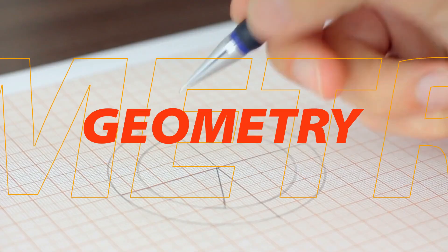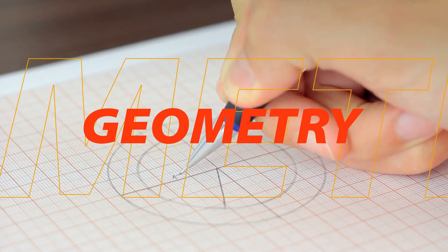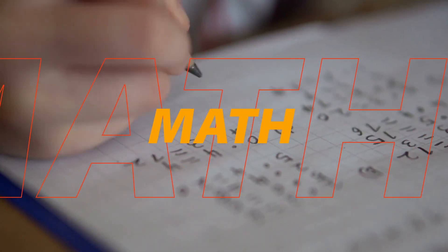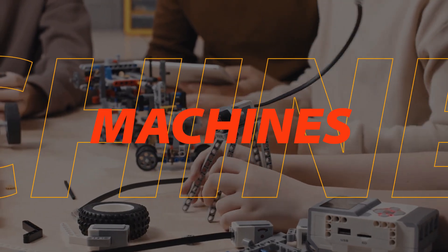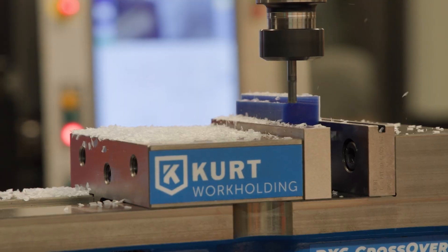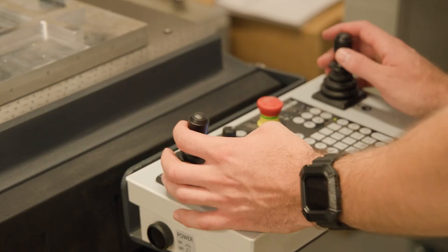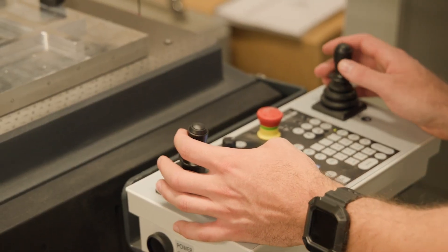You become a machinist by understanding geometry and math and machines and then taking all of that knowledge together to be able to remove material using a machine tool to produce the part that you want.